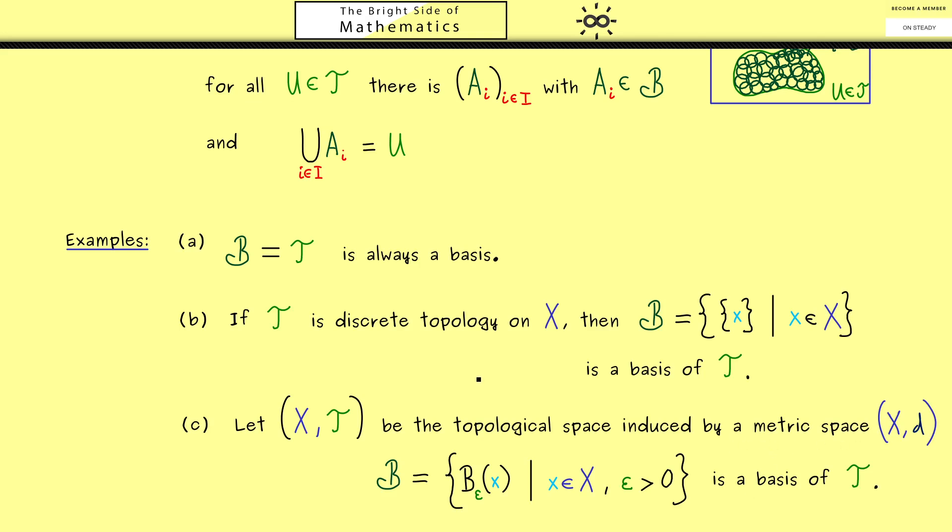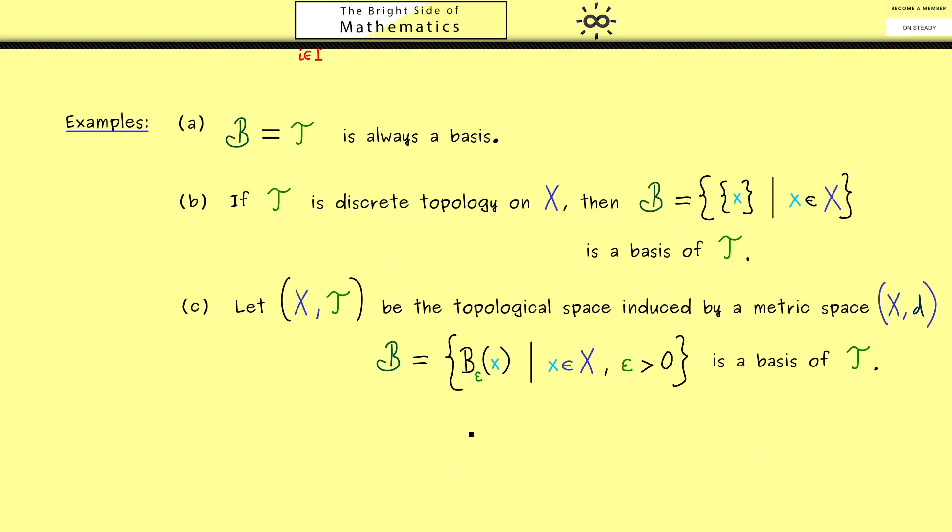So not a surprise here, but we can simplify this even more when we look at a special metric space. And this one is well-known: it's R^n with the Euclidean metric. Usually, just with a few words, we just say that T is the standard topology on R^n. Now because we have a metric here, we can use the same base as before.